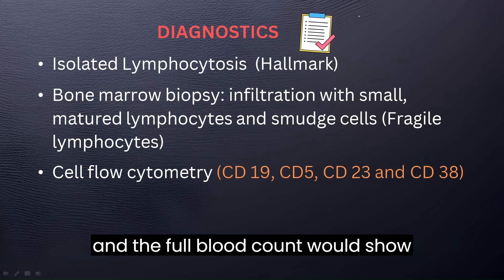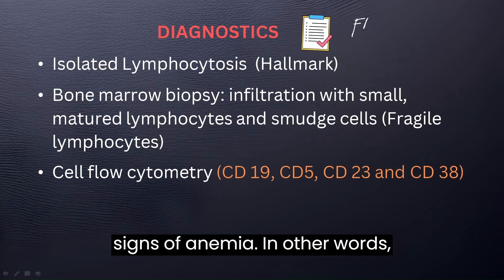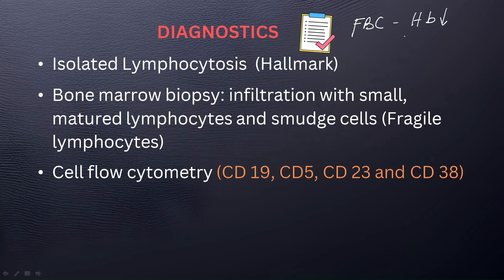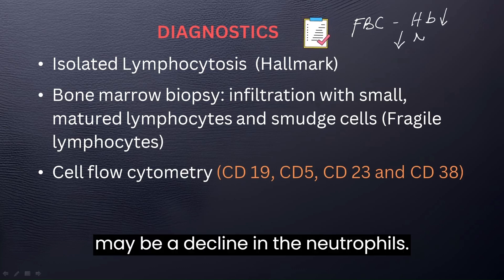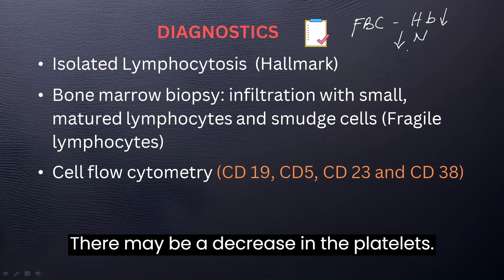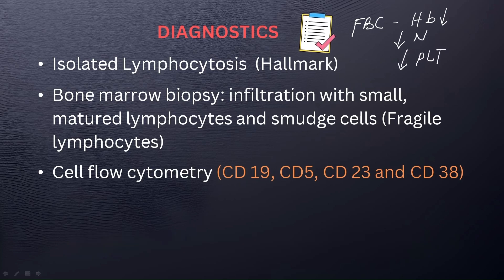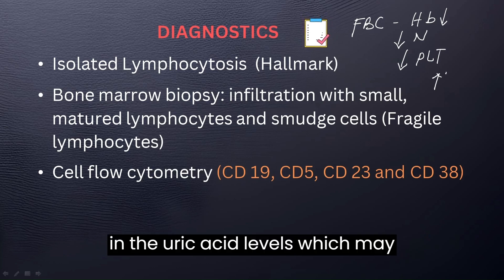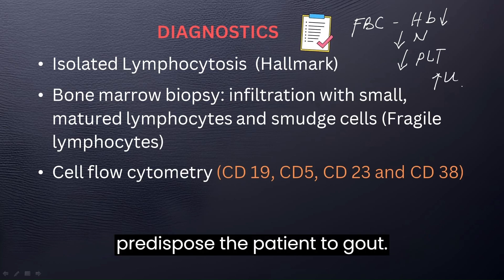The full blood count would show signs of anemia — the hemoglobin may be low. There may be a decline in neutrophils, a decrease in platelets, and of course there may be an increase in uric acid levels, which may predispose the patient to gout.